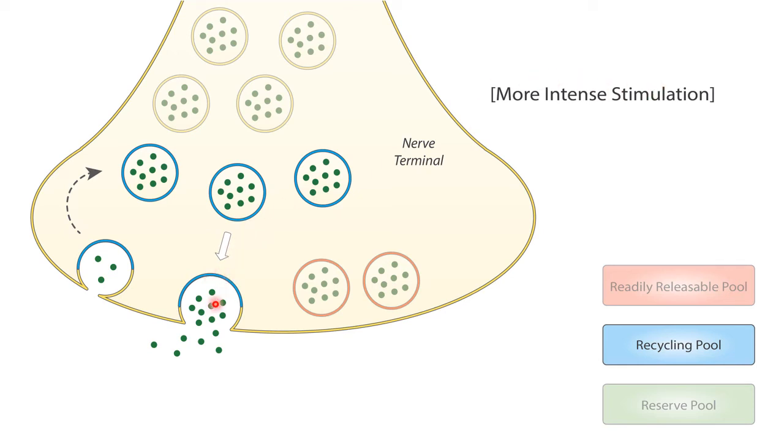and then they undergo endocytosis and are again refilled with neurotransmitters, thus being recycled so they can be again mobilized to the active zones to release and continue the cycle. This pool is thought to contain about 5-20% of all vesicles and drives neurotransmission during more prolonged neuronal firing.